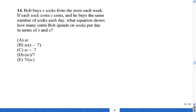Bob buys S socks from the store each week. He may have some issues, right? If each sock costs C cents and he buys the same number of socks each day, what is wrong with this Bob? What equation shows how many cents Bob spends on socks per day in terms of S and C?